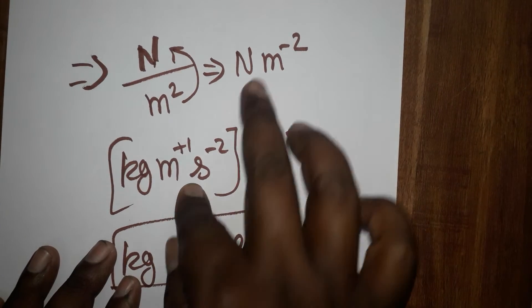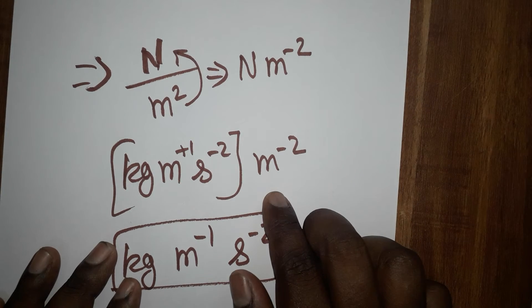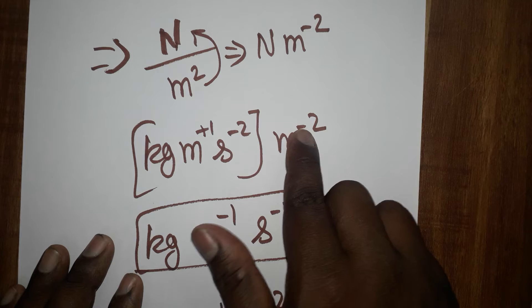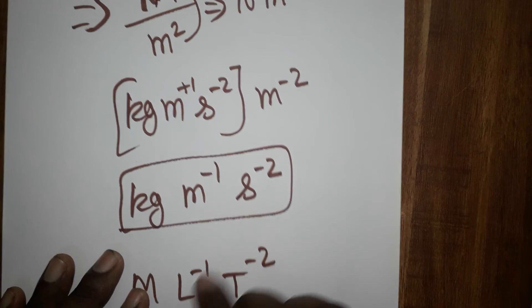So kg meter second minus 2, which is called Newton, and meter minus 2 we can write. When we are solving this, kg meter plus 1 minus 2 will get as meter minus 1 second minus 2.